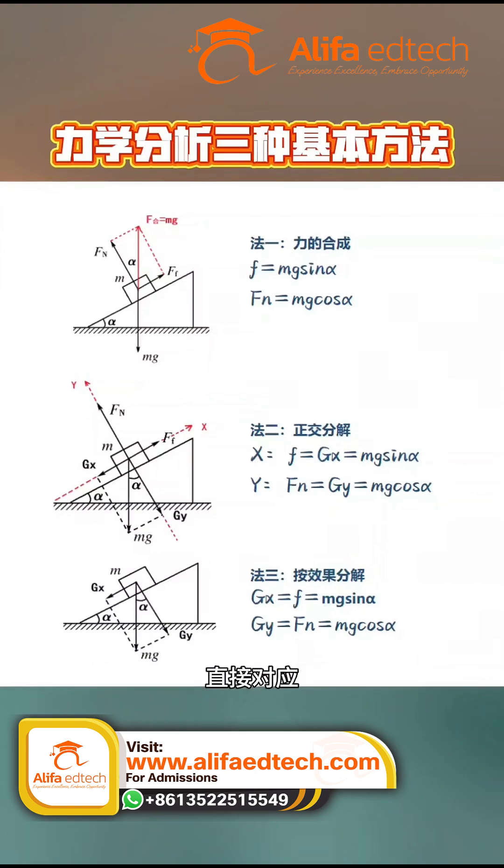Let's analyze this again using the second method, orthogonal decomposition. Because the block has a tendency to slide down due to gravity, the inclined plane exerts an upward friction force on the block along the incline. These two forces are equal in magnitude and opposite in direction.